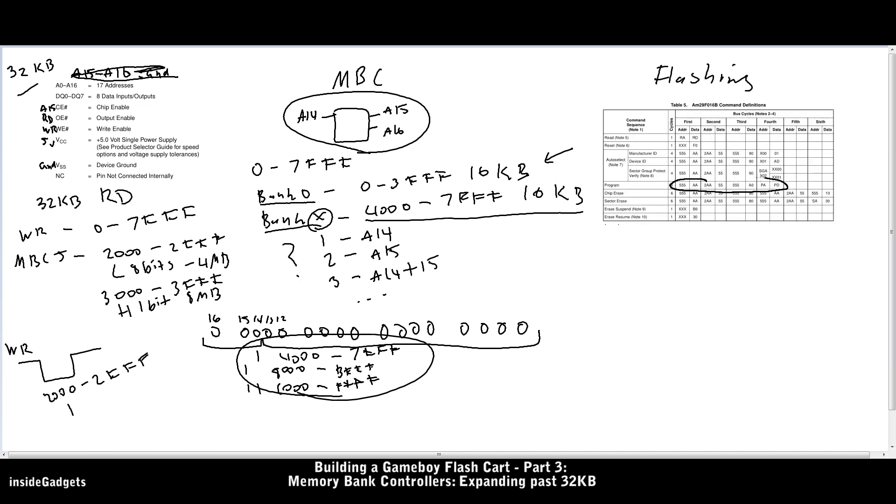So here's the programming commands, like we went through in the last video. If you recall, for programming we pulse WR, which is what we're doing for the MBC. We can see that the address is 555 or 2AAA, which for MBC5 doesn't affect the ROM switching range. So that means we can write to the address 555 and 2AAA without the MBC switching banks on us.